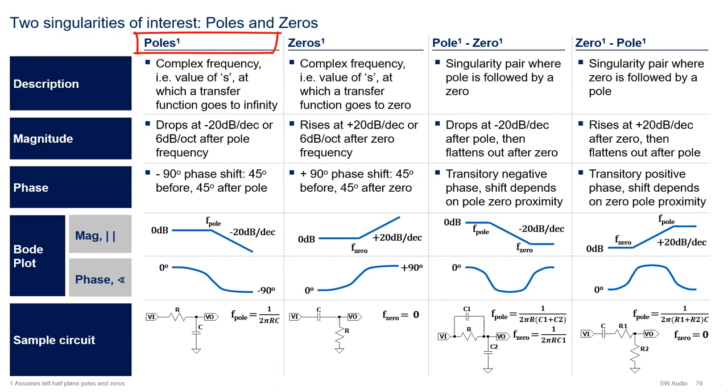A pole is a complex frequency, in other words, a value of s, at which a transfer function goes to infinity. While this definition is strictly correct, it's not very intuitive, so don't worry about it too much. After a pole, the magnitude of a transfer function rolls off at -20 dB per decade, or 6 dB per octave, and you gain -90 degrees of phase shift, as shown in the sample Bode plot. As a sample circuit, think of the RC low-pass filter.